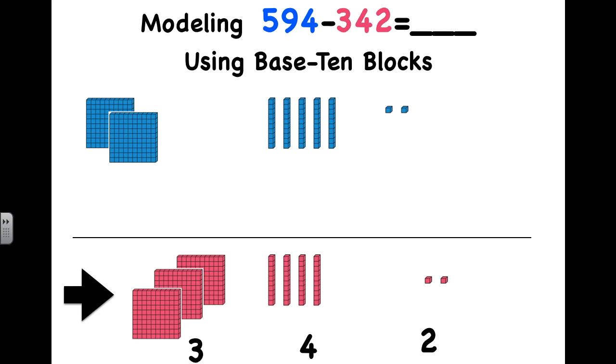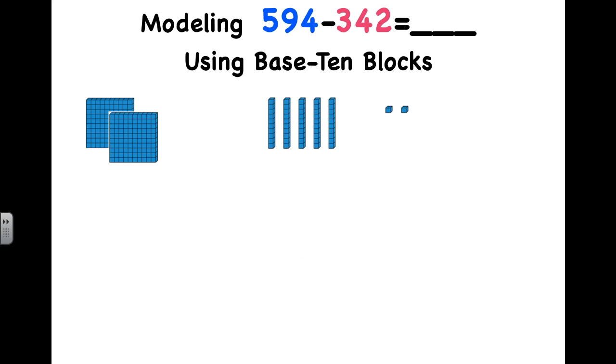We've taken away 342. So, the amount that's left over, the amount remaining, should be the difference between 594 and 342. So, let's see what we have left over. We have two hundreds, five tens, and two ones. So, this means the difference between 594 and 342 is 252.